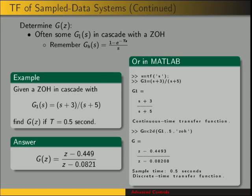So this is the step to go from continuous systems, as covered in the first controls class, to systems that have sampled-time data or digital control systems.